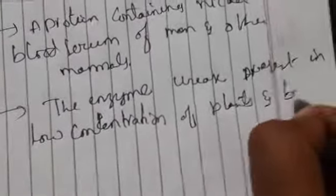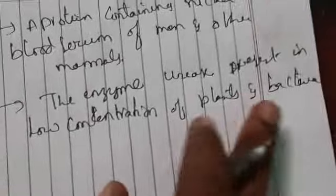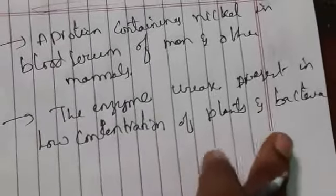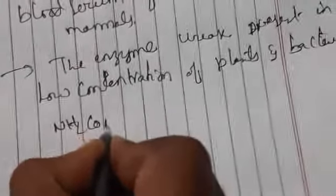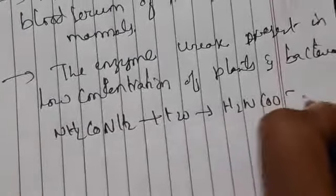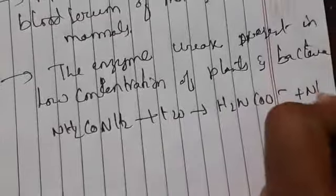This enzyme, urease, is present in a number of plants and bacteria. During hydrolysis of urea, it forms NH₂COO⁻ and NH₄⁺, producing acid, base, and ammonia molecules.